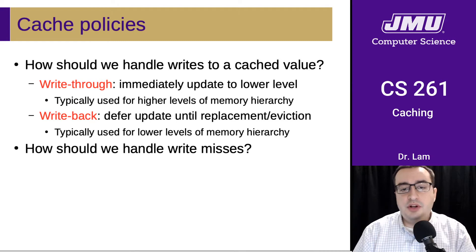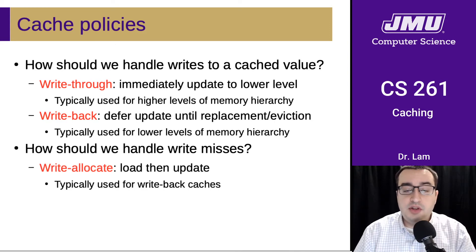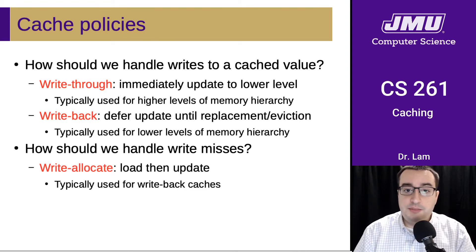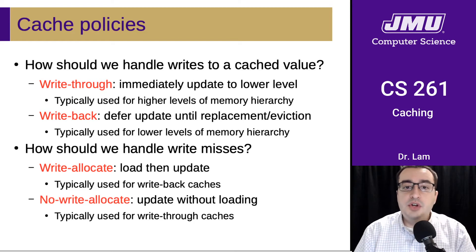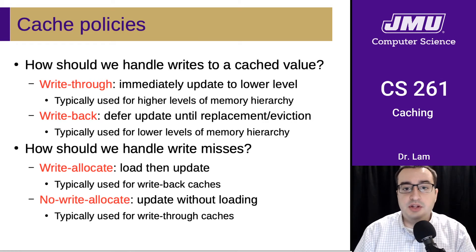We should also think about how we want to handle write misses — when we're trying to write to something that has not been loaded into the cache. There are two policies here. There's write allocate, which loads the line and then does the update, typically used for write-back caches. And there's no-write allocate, which does the update down to the lower level without loading it into the cache, typically used for write-through caches.